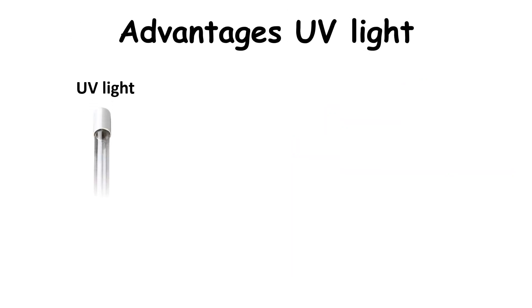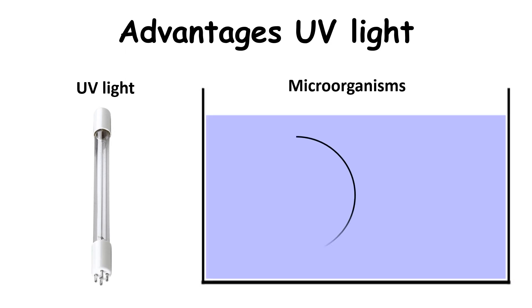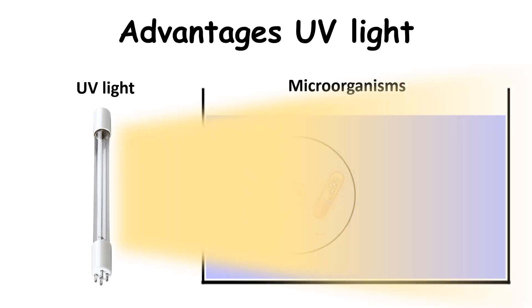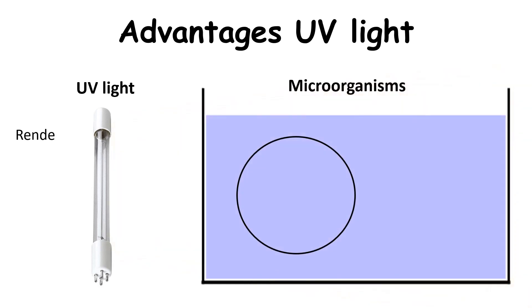In comparison, UV light provides rapid, effective inactivation of microorganisms through a physical process. When bacteria, viruses and protozoa are exposed to the germicidal wavelengths of UV light, they are rendered incapable of reproducing and infecting.